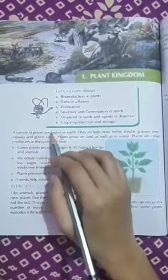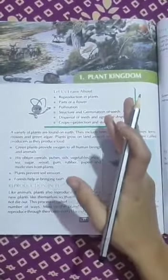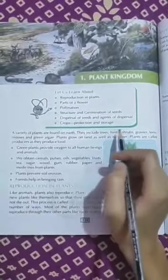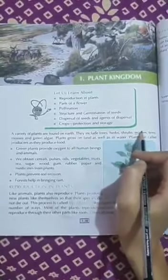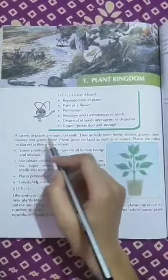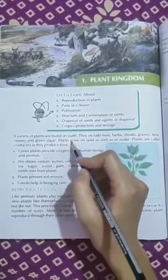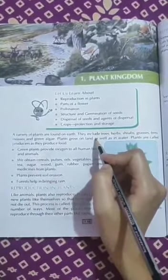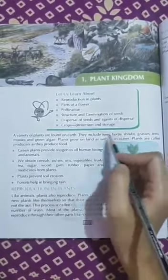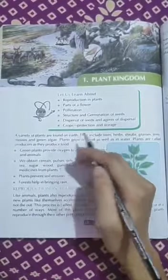A variety of plants are found on earth. Different plants may be found such as trees, herbs, shrubs, grasses, ferns, mosses and green algae. Plants grow on land as well as in water.